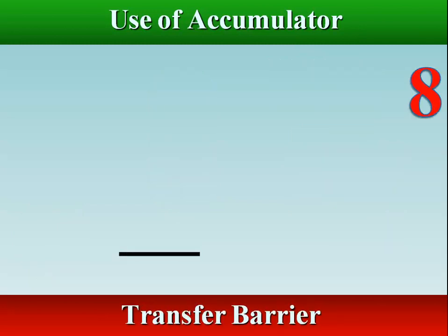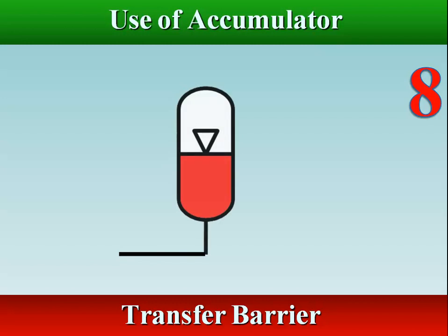The use of a transfer barrier type accumulator enables transfers to take place within the fluid circuit without the different types of fluids or gases mixing.